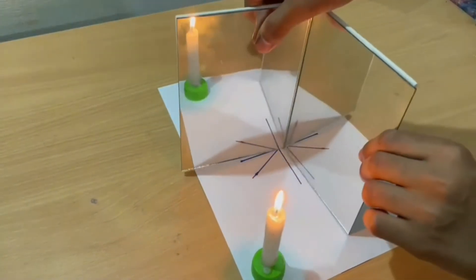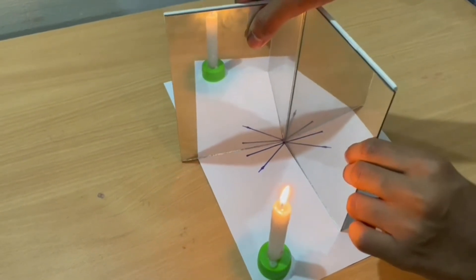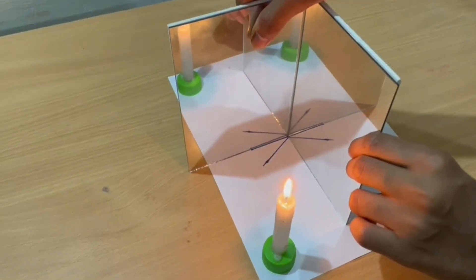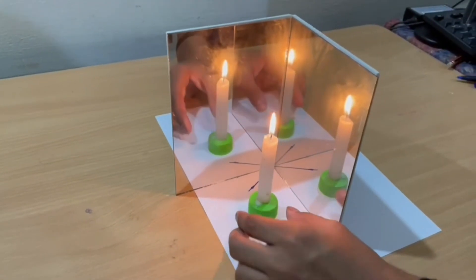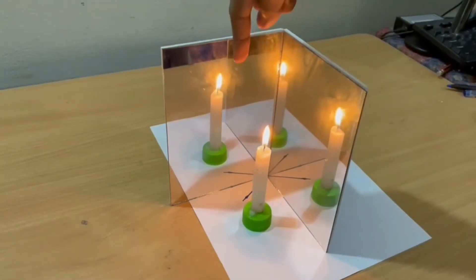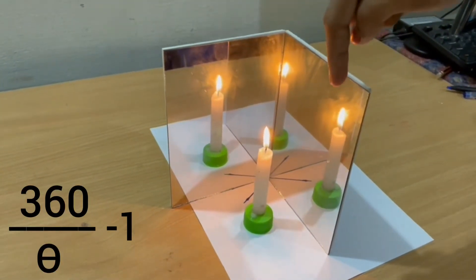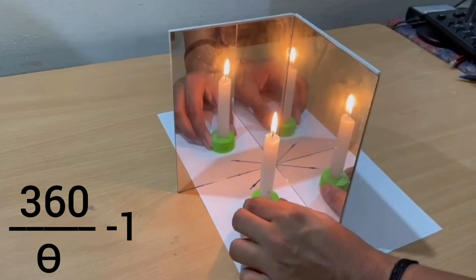We can see multiple images of the candle. This is because the image in one mirror acts as the object for the other mirror. The number of images formed depends upon the angle between the mirrors and can be determined by the formula 360 divided by theta minus 1, where theta is the angle between the mirrors.